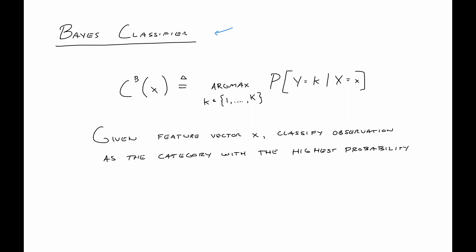What does the Bayes classifier do? Its whole purpose is to minimize the probability of misclassification. Given some x, you should classify the observation as the category with the highest conditional probability. One reaction to that might be 'duh, that's the most obvious thing to do' — and that's fair. But what we're going to be doing is chasing this value all the time, because we're not going to have this information in practice. This is information we'd have if we knew the full distribution of the data-generating process. In practice, we'll have data and we'll have to estimate these probabilities.